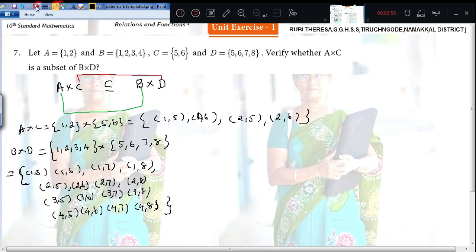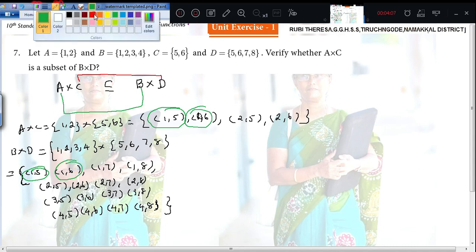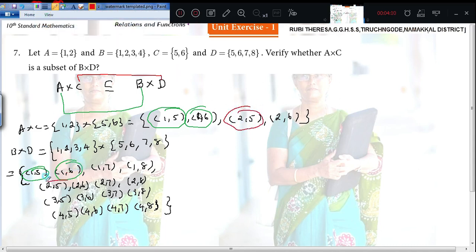Now you check the pairs. 1 comma 5, 1 comma 5, 1 comma 6, 1 comma 6. Next 2 comma 5, 2 comma 5, 2 comma 6, 2 comma 6.